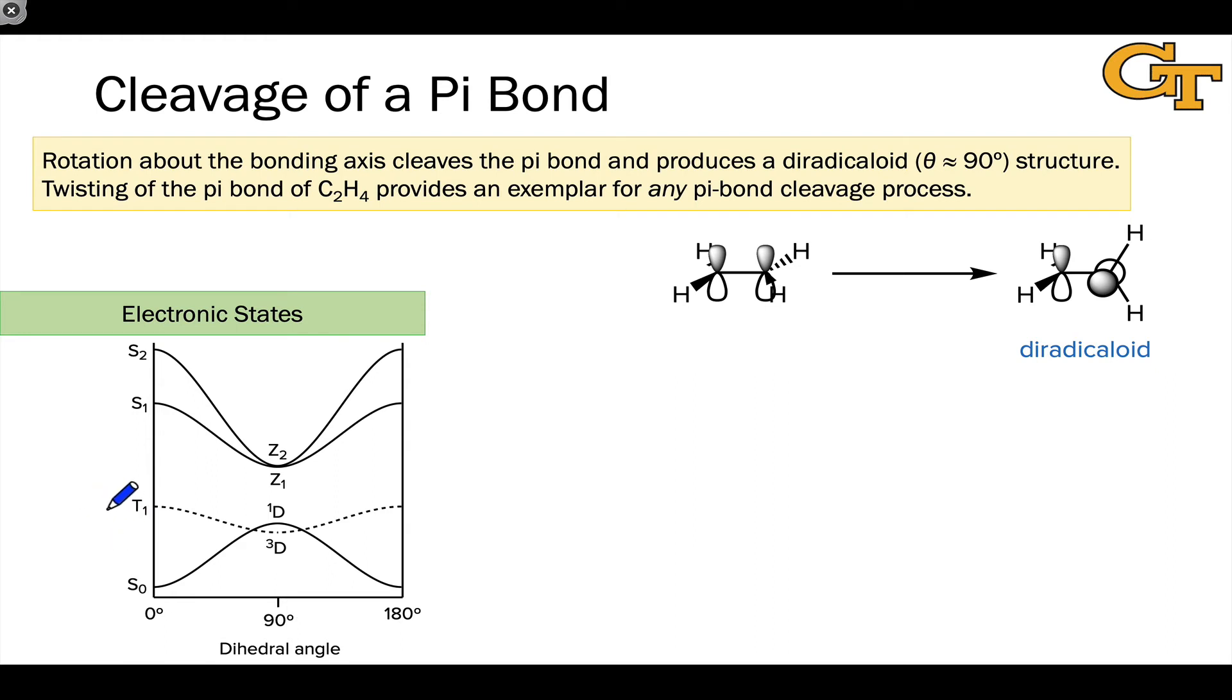Something we can notice straight away is that the triplet state correlates with a triplet diradical. This is a general idea that t1 states can only correlate with triplet diradicals, and there is a decrease in the energy of the t1 state because of relaxed electron-electron repulsion as the rotation happens.